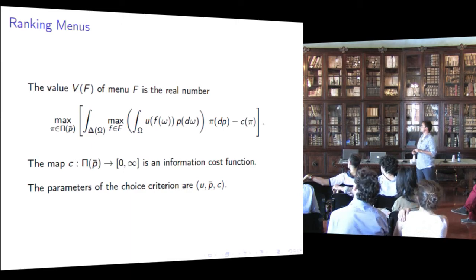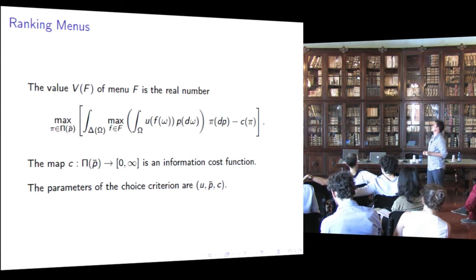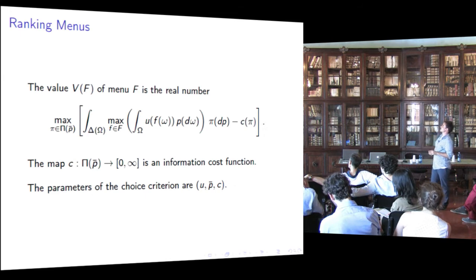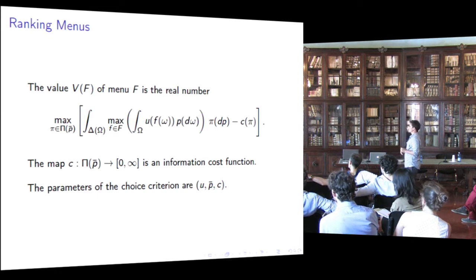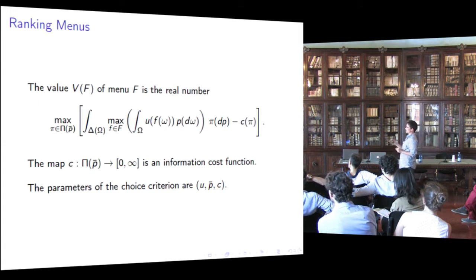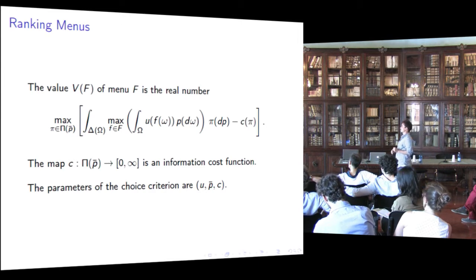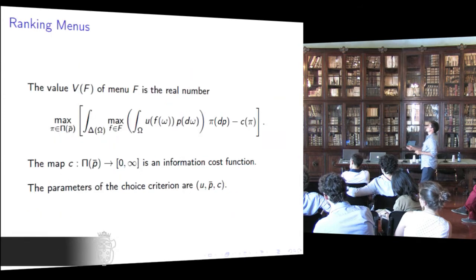Finally, we are ready to see how the DM who is rationally inattentive ranks menus. The value of a menu V(F) is given by the real number defined by this expression. The only object I have not introduced so far is C, which is a map from channel to the non-negative part of the extended real line, and which is an information cost function. Let me give you an interpretation of this expression.